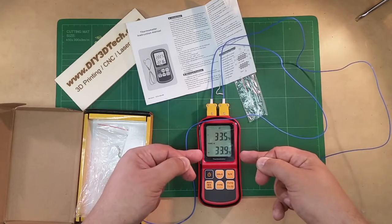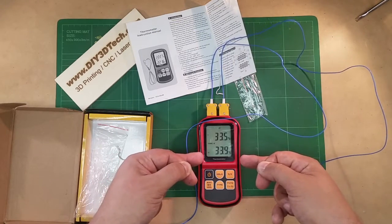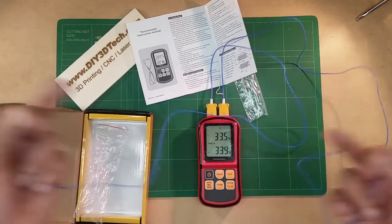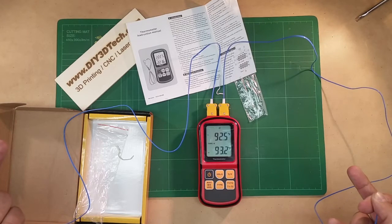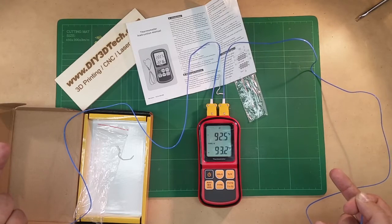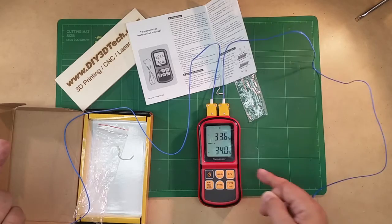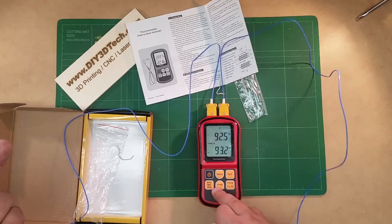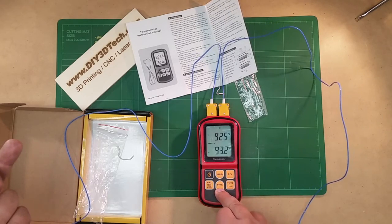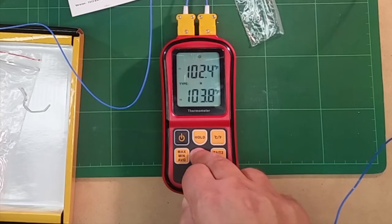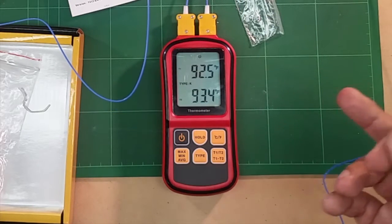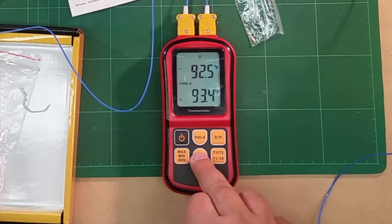So, anyways, we can switch to Fahrenheit. So that's pretty cool. Back to Celsius for our metric friends. Oh, here's how we change the type. So we can switch through the different types. So we just go back to K. So this is how you control the type. So that's very cool.